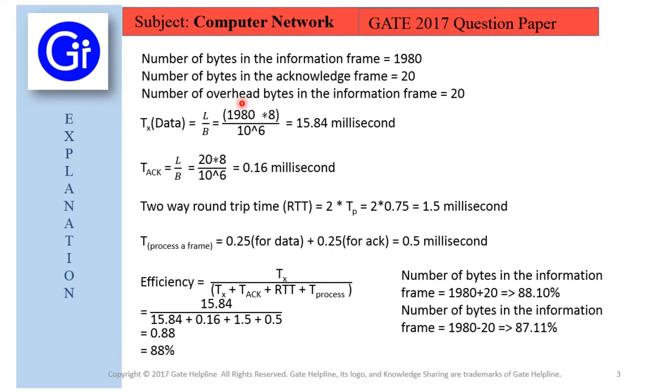But according to us, in the question it's given that number of overhead bytes in the information frame is 20. So the overhead bytes are given, which means this information frame is including overhead bytes of 20. So for data transmission we must subtract 1980 by 20. So according to us this option is the correct one.